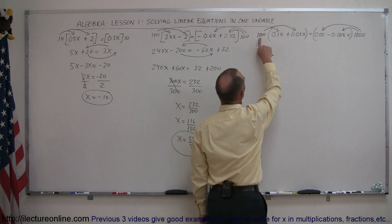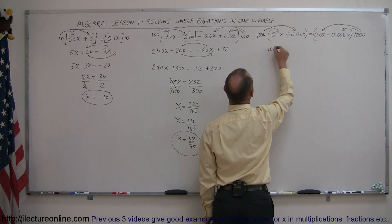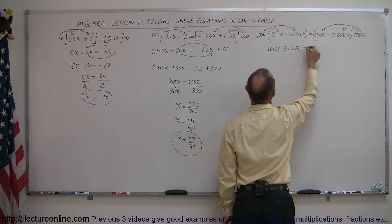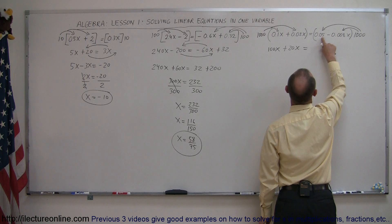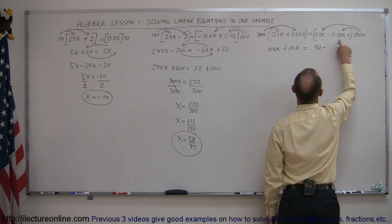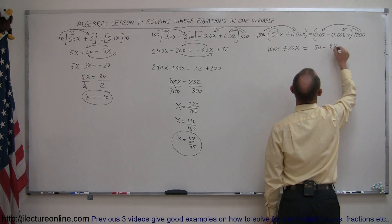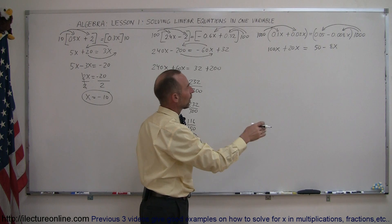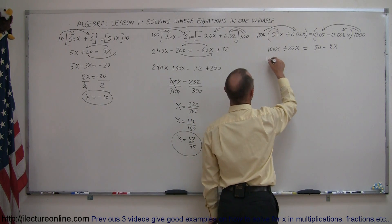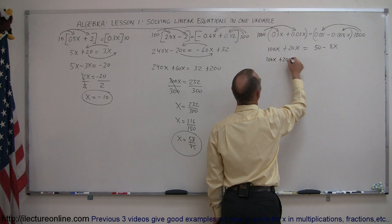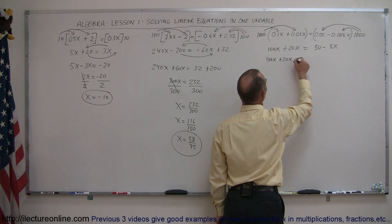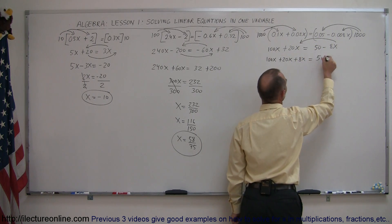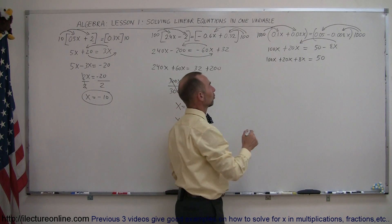Let's see what we get. 1,000 times 0.1x becomes 100x, 1,000 times this becomes plus 20x equals 1,000 times this becomes 1,250, minus 1,000 times this becomes minus 8x. At this point, we're ready to move all the terms with the x to the left side, all the terms without the x to the right side. So here we get 100x plus 20x, and then we move the minus 8x over, that becomes a plus 8x. Notice this goes across equal sign and the sign changes, the 1,250 stays on the right. We can now combine all like terms.